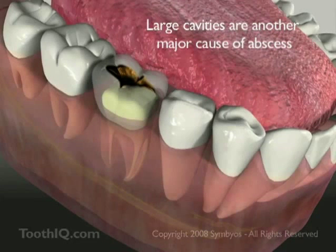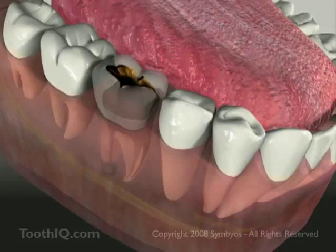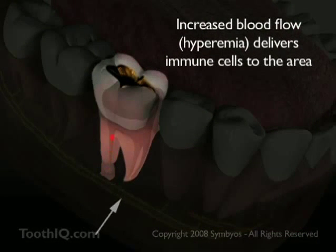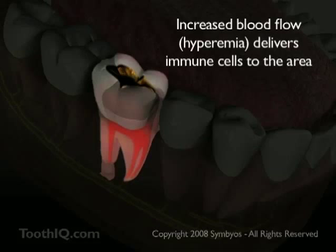Many different species of bacteria are found in the mouth, and the ones that decay teeth may be different from those that produce abscesses. A decayed tooth simply creates favorable conditions for bacteria to multiply. The body responds to foreign invaders like bacteria by increasing blood flow to the tooth to deliver specialized cells that can fight the infection. The increased blood flow to the tooth, known as hyperemia, produces intense pressure inside because teeth are rigid and cannot swell.